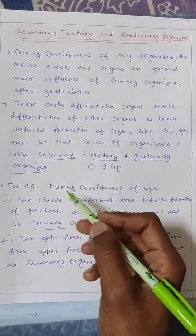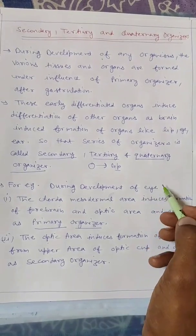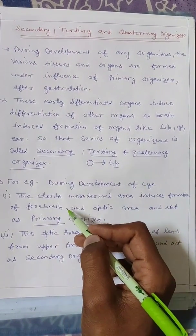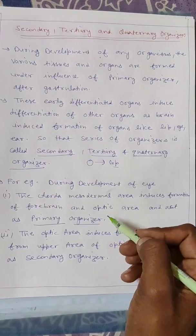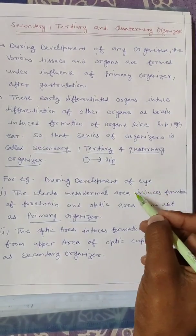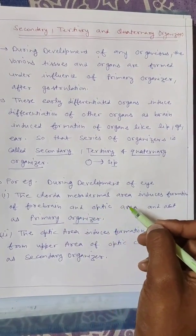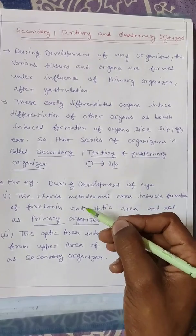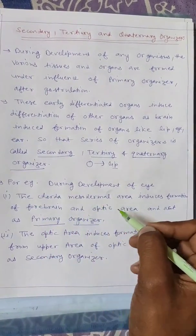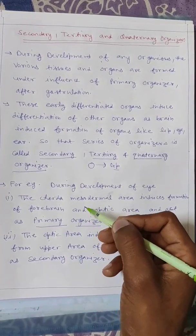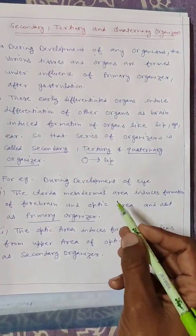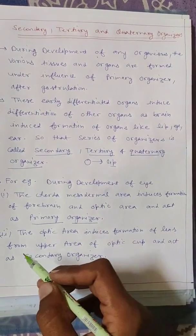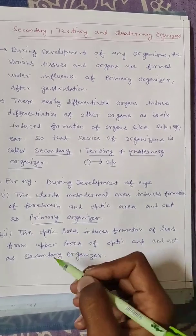For example, during development of the eye, the codomedial area induces formation of the forebrain and optic area, and acts as the primary organizer. The codomedial area induces formation of the forebrain and optic area, which is called the primary organizer. From this primary organizer, the differentiated cells — the organs formed, like the optic area and forebrain — are produced. This optic area then induces formation of the lens from the upper area of the optic cup, and acts as a secondary organizer.